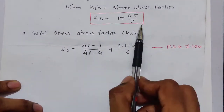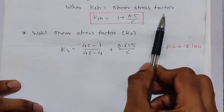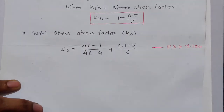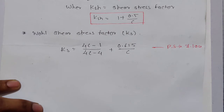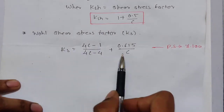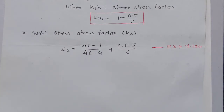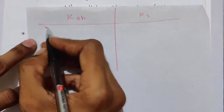Under static loading, wire curvature may be neglected and we use K_sh. In actual conditions — particularly fatigue loading — the springs are curved and curvature effects must be taken into account, so we use the Wahl shear stress factor K_s.